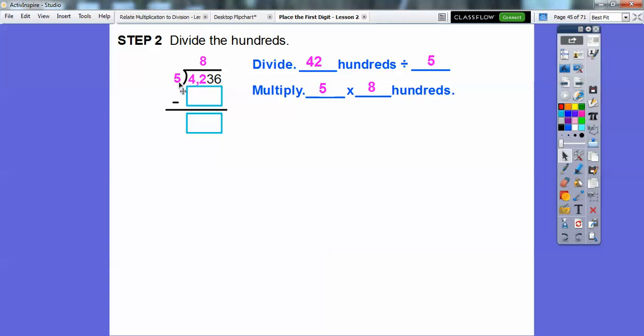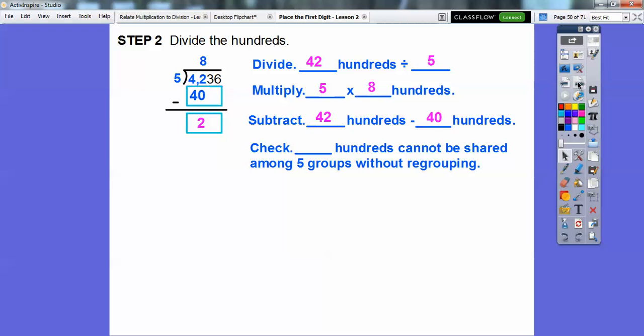And so then we multiply 5 times 800s right there. We multiply these two numbers. So we get 40. So we'll put that in there, and then we're going to subtract 4,200 minus 4,200. So this 4,200 minus the 4,200. Notice it's in the 100s spot right here, right above where the 8 is. And then when we subtract, we're going to get 200 right there. And then 200s can't be shared among the five groups. So what are we going to do now?